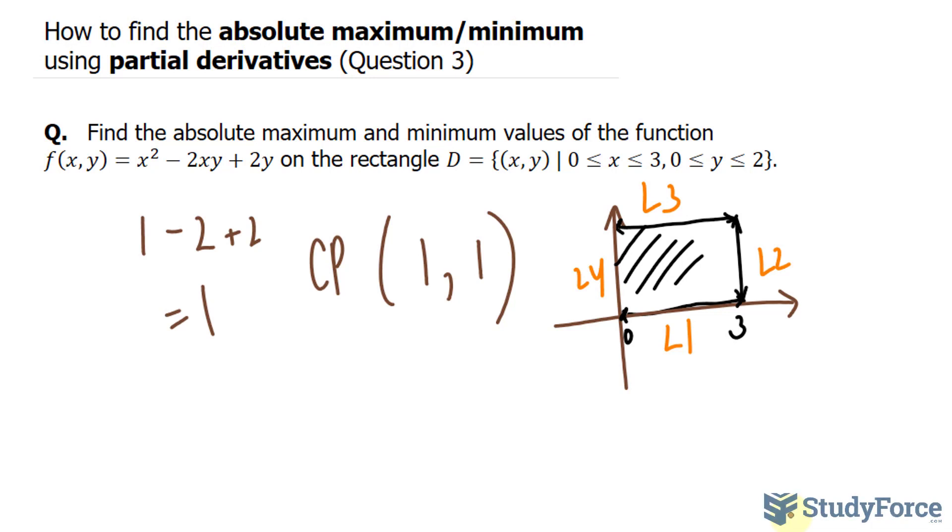Technically, what you're supposed to do is evaluate the function as it is, where x is unknown because between 0 and 3, there are infinite x values, but the y is known. So you evaluate it at x and 0, because y is 0 along this line.